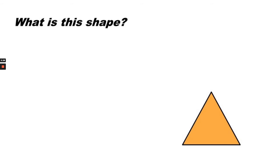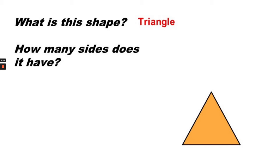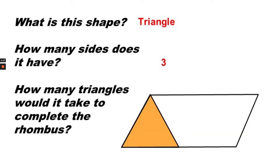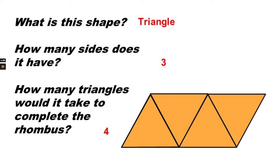What is this shape? A triangle. How many sides does a triangle have? Three. How many triangles would it take to complete the rhombus? It would take four triangles to complete the rhombus.